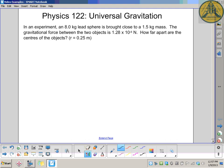This question is about universal gravitation. In an experiment, an 8 kilogram lead sphere is brought close to a 1.5 kilogram mass. The gravitational force between the two objects works out to be 1.28 times 10 to the negative 8 Newtons. How far apart are the centers of the objects?